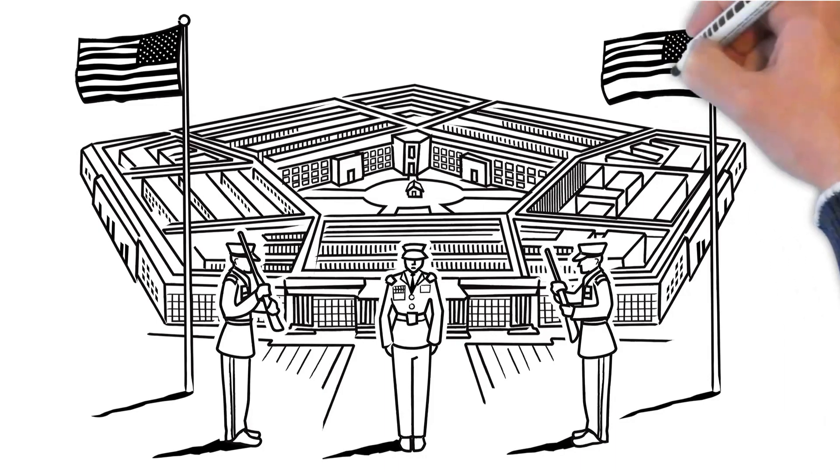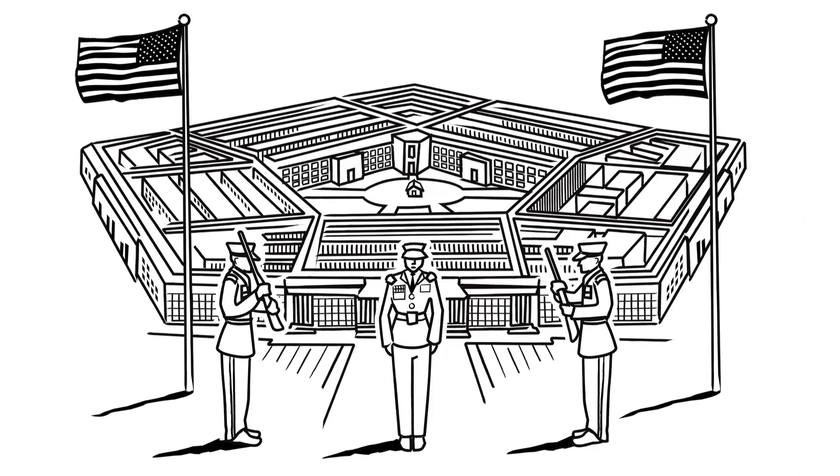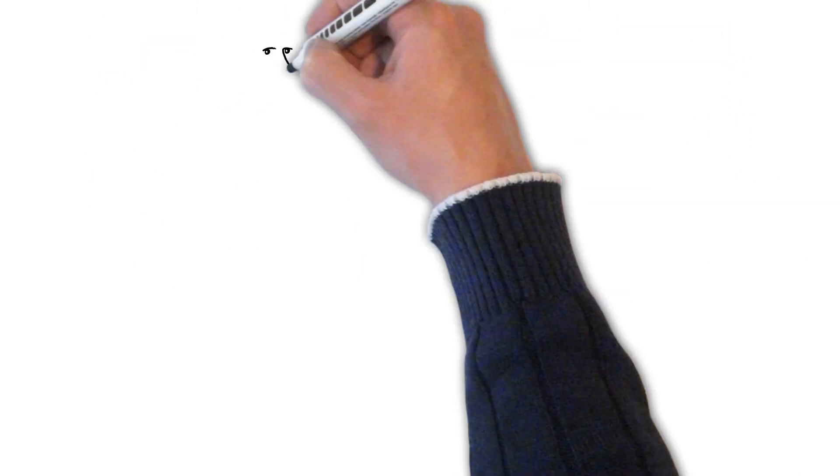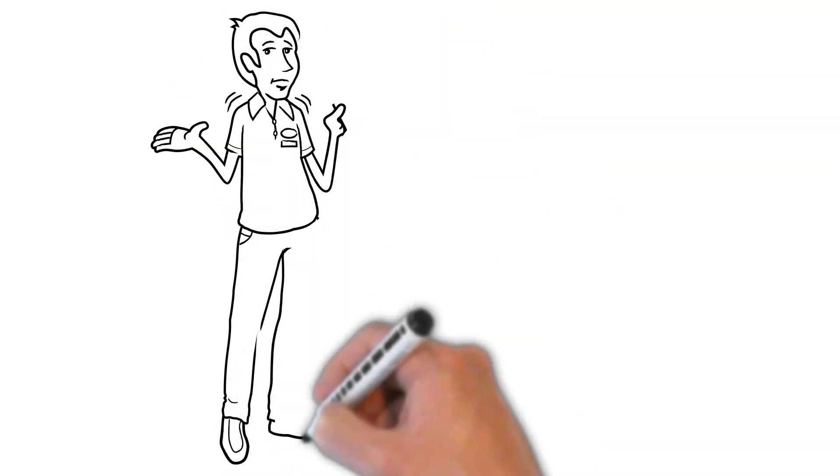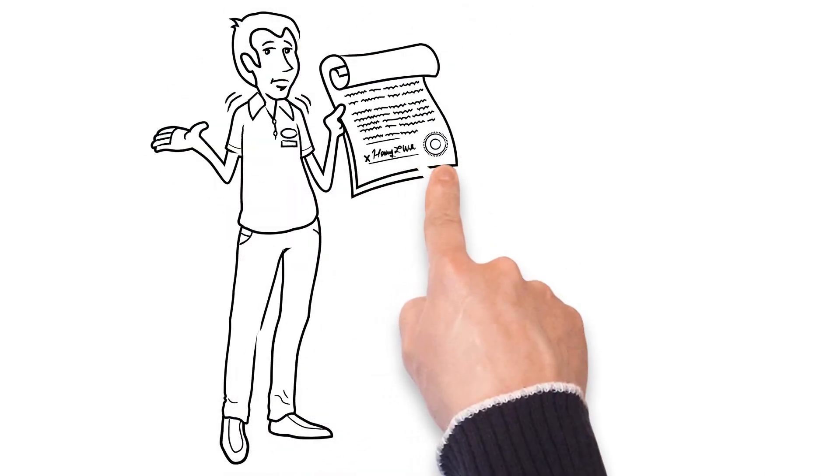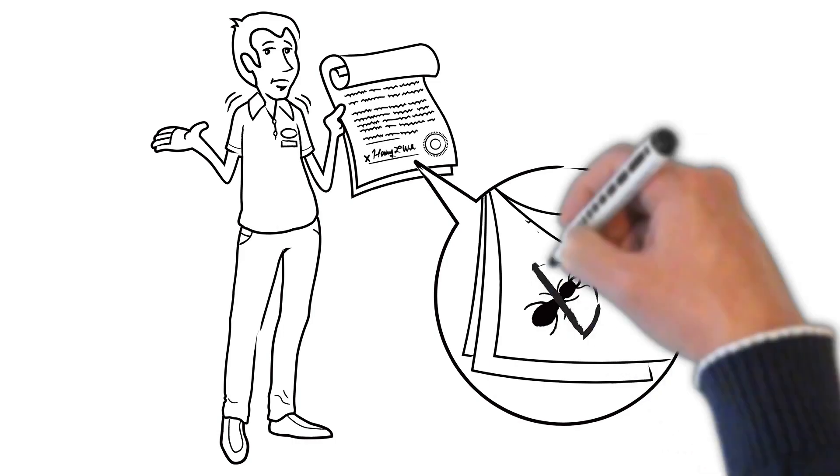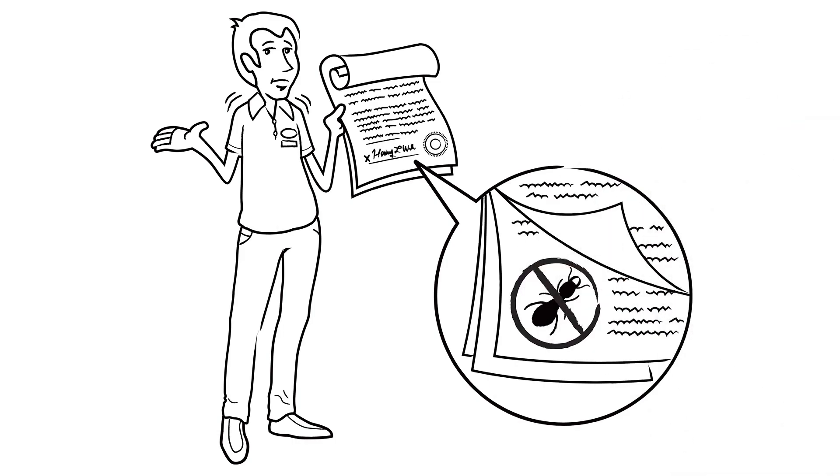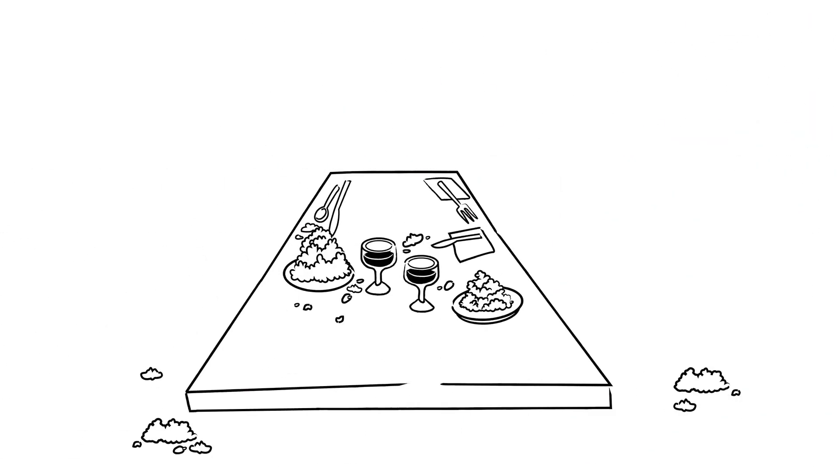Termites will stop at nothing until your home is totally and completely destroyed. And before you call your homeowners insurance company to file a claim, termite damage is considered routine home maintenance. That means it's your responsibility.